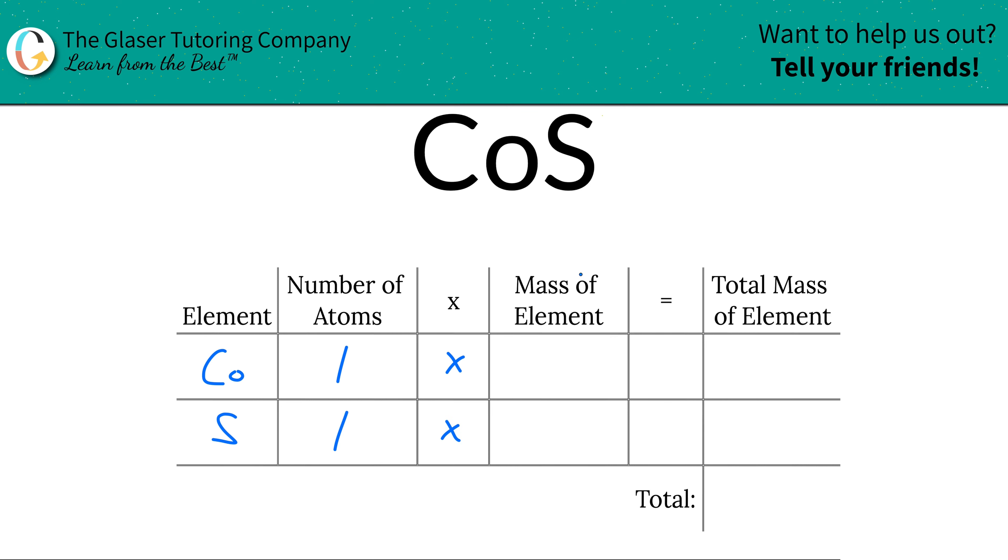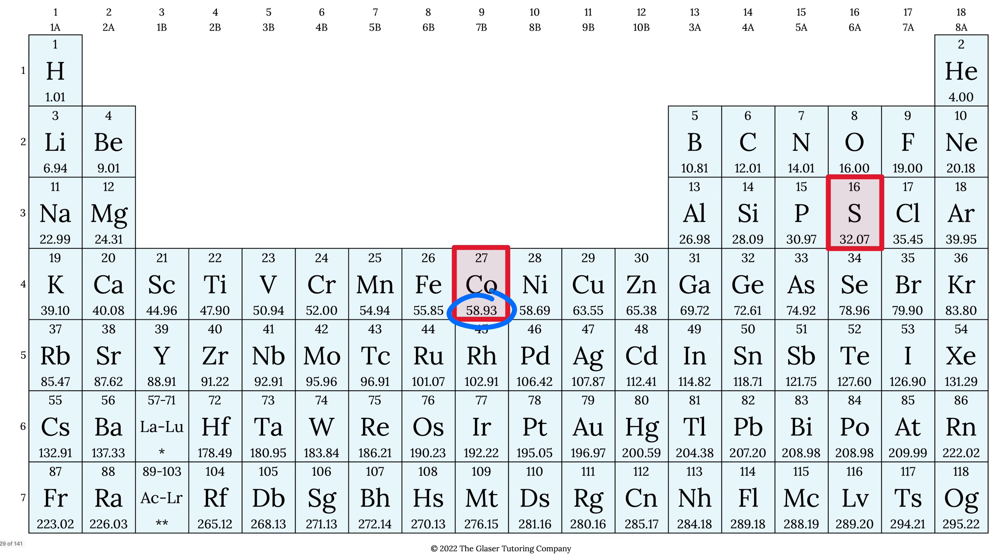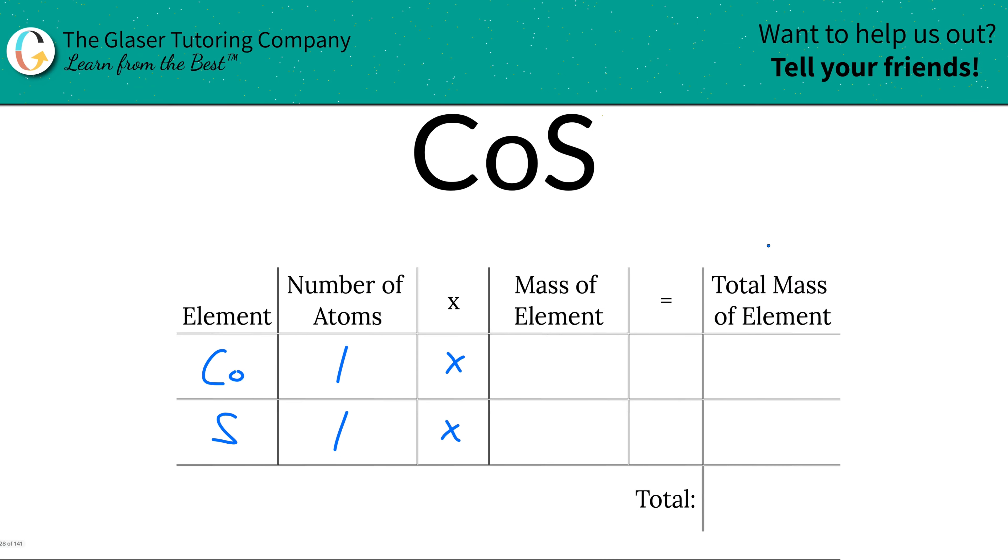Then you're going to take those numbers of atoms and multiply it by the mass of the element. Where do we find the mass? You got it. Periodic table. Let's take a look. Here's the mass of cobalt, 58.93. And here's the mass of sulfur, 32.07. So let's write that in.